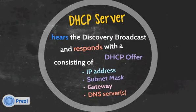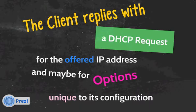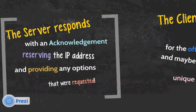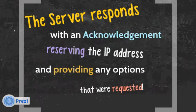A DHCP server is listening on the network, hears the discovery broadcast, and responds with a DHCP offer. A DHCP offer consists of an IP address, a subnet mask, gateway, and DNS servers. The client replies with a DHCP request for the offered IP address, and may ask for options unique to its configuration. The server responds with an acknowledgment, reserving the IP address and providing any options that were requested.